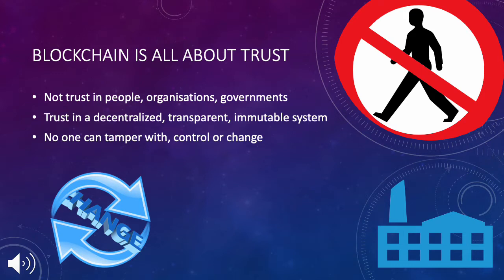But not trust in people, organizations, governments, or even a not-for-profit association. It is about trust in an immutable, decentralized, and transparent system — a system that no one can tamper with, control, or change.